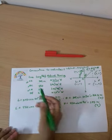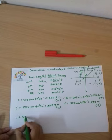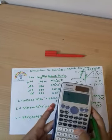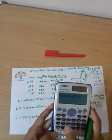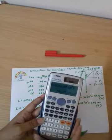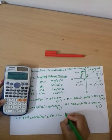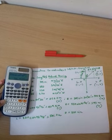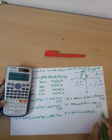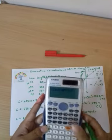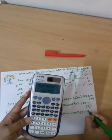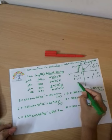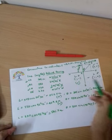Now let's go to traverse leg CD. The distance is 830. The latitude equals 830·cos(48°48'), which equals 546.7 meters. The departure is negative. This falls in the third quadrant, where both latitude and departure are negative.